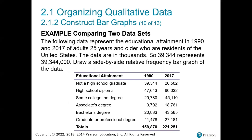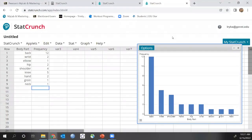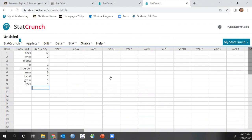The following data represents the educational attainment in 1990 and 2017 of adults 25 years and older who are residents of the United States. The data is in thousands, so a value of 39,344 actually represents 39,344,000 people. We need to draw a side-by-side relative frequency bar graph. The downfall with StatCrunch is that for side-by-side graphs, there is no way to switch to relative frequency after the fact — so we have to calculate those values ourselves.